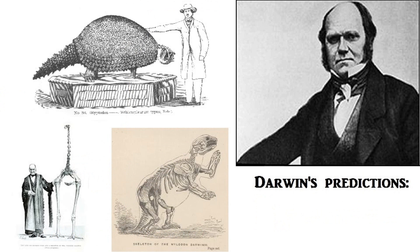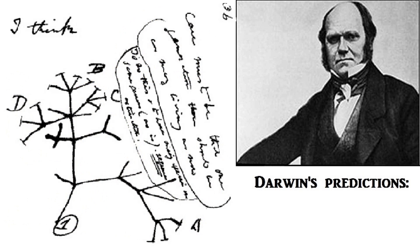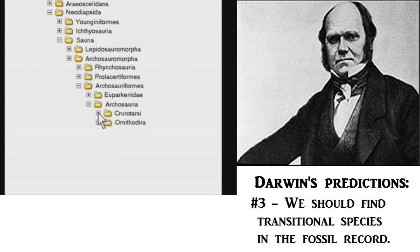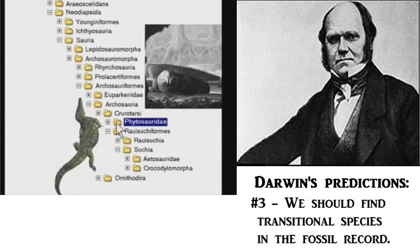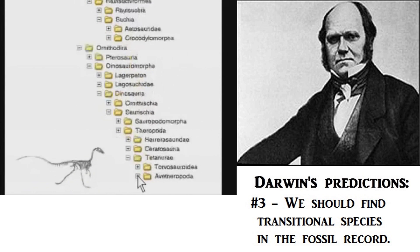Darwin also studied paleontology, so he knew about extinct species too. Although these were different from anything still alive today, he found fundamental similarities connecting them to distantly related groups in a sort of family tree of all living things. So he predicted that if his theory was true, there should be transitional species discovered in the fossil record, and since then scientists have found hundreds and hundreds of them, with some of those lineages now essentially complete.